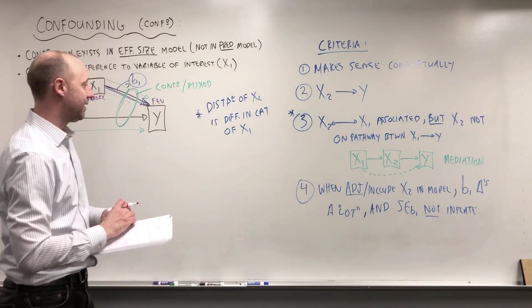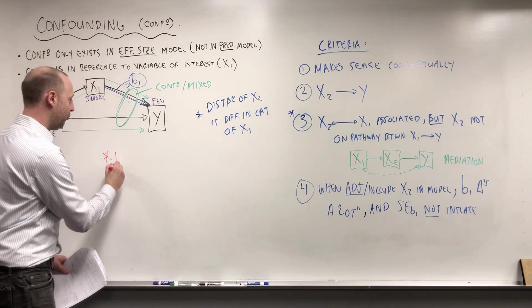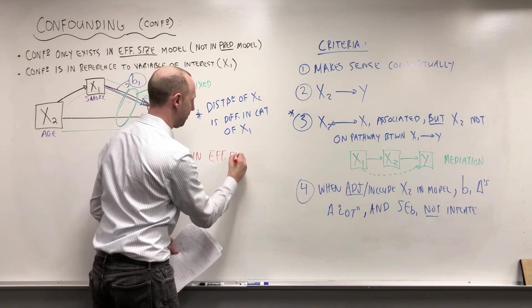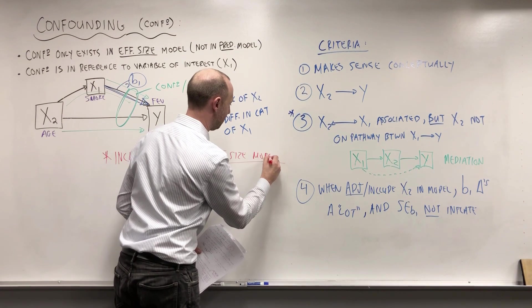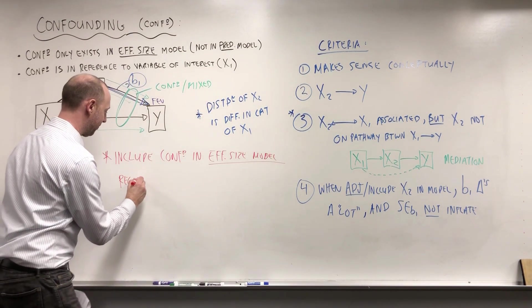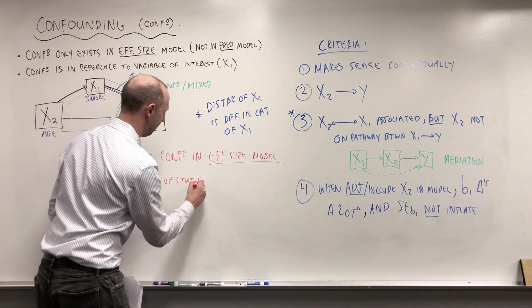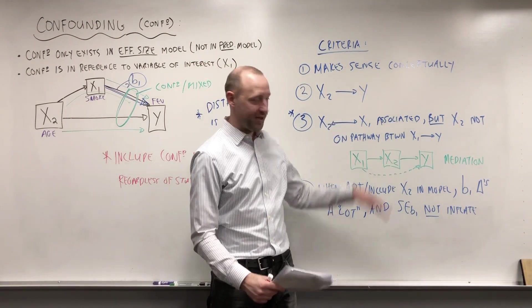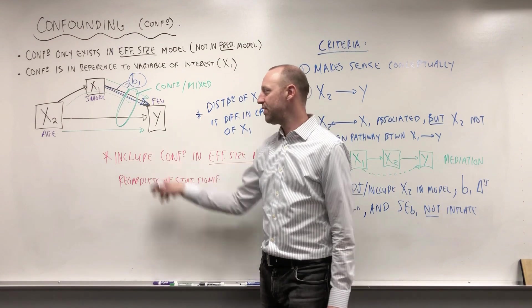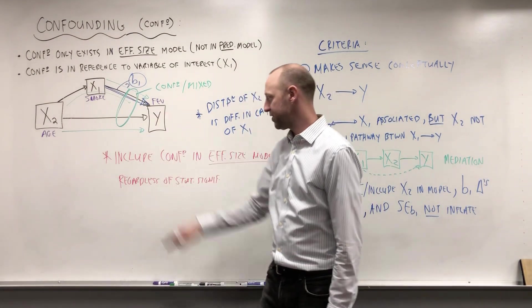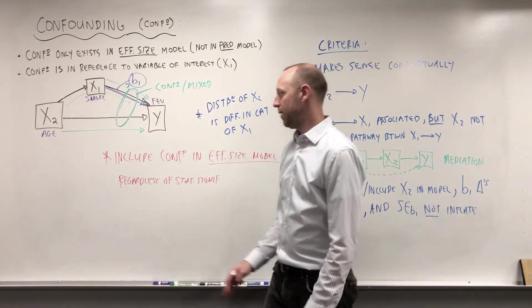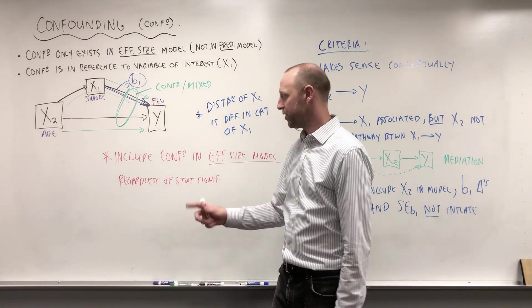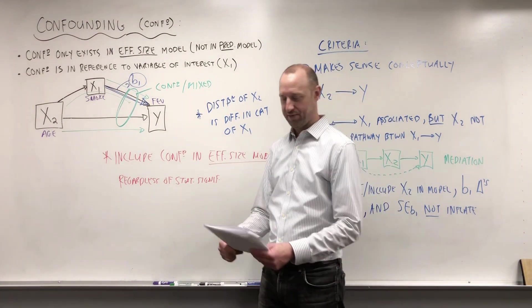This one's important. We want to include confounders in an effect size model, regardless of statistical significance. In this example, if we know age is a confounder, or it made sense conceptually, everything checked out, we're going to include it in the model, even if age doesn't seem to be a statistically significant predictor of the outcome. If it made sense conceptually, we know it's a confounder, we put it in there. We're not worried about doing things like partial F-tests, or R-squareds, or AIC and BIC. Those are topics we have touched on and we're going to touch on them more in following lectures. But if something's a confounder, it goes in the model, regardless of statistical significance.